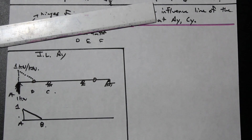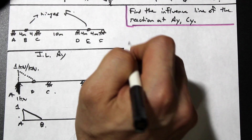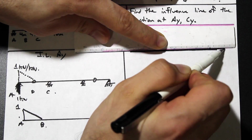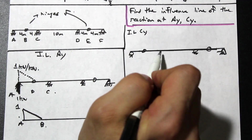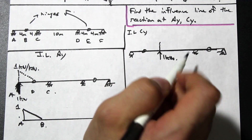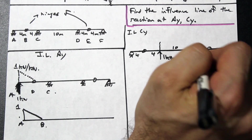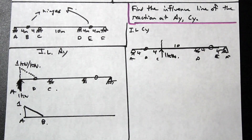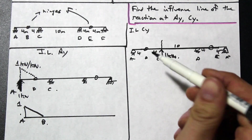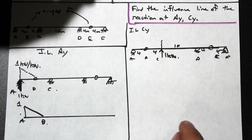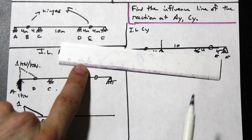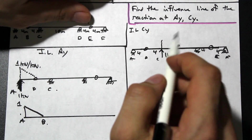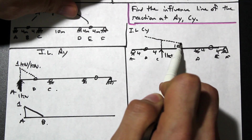Now let's look at the influence line for CY — this is a little trickier. Drawing the beam out again: we have four-meter spans with points A, B, C, D, E, F. At CY we apply our one kilonewton upward. Think about what happens: if you push on the left side of center, the left side goes up and the right side does not. So the deflected shape goes up to the left all the way to B, reaching zero at the roller support.